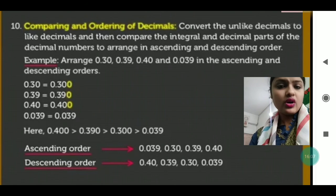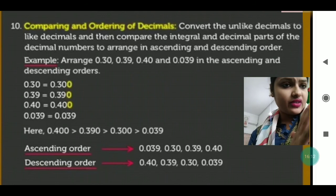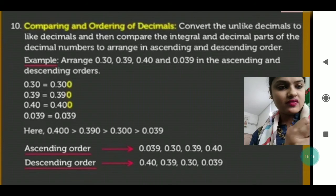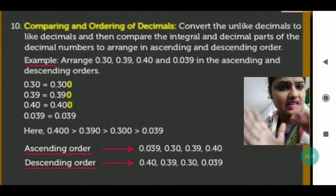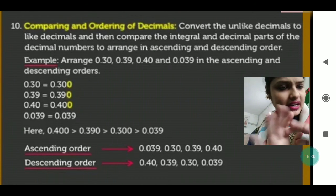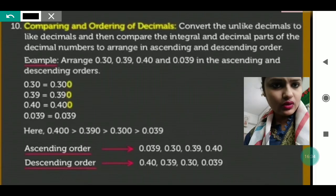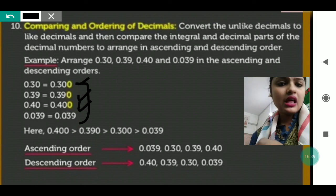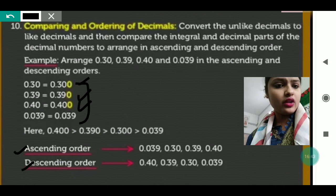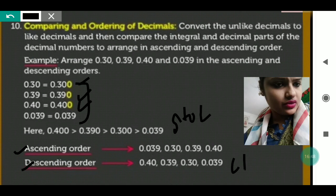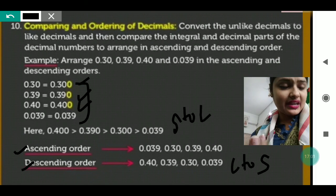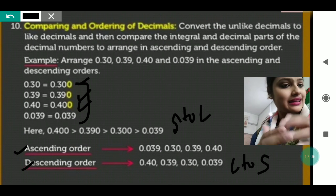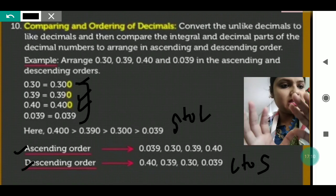For comparing and ordering decimal numbers, first convert unlike decimals to like decimals by putting the required number of zeros at the end. Then compare the integral part and the decimal part. To arrange in ascending order go from smaller to larger; for descending order go from larger to smaller. This is how we write numbers in like fractions and make equivalent fractions for comparison.